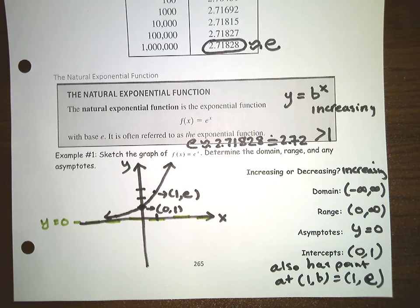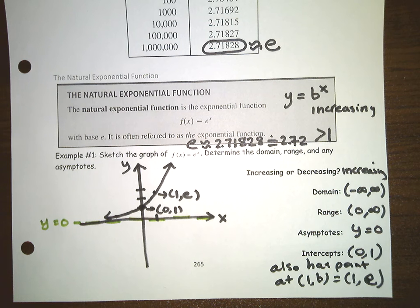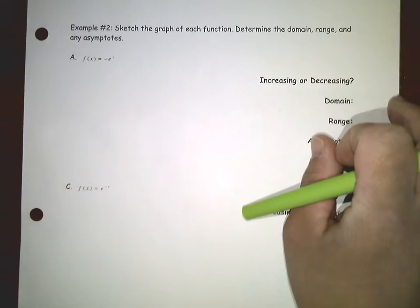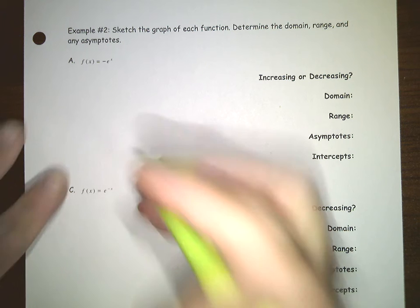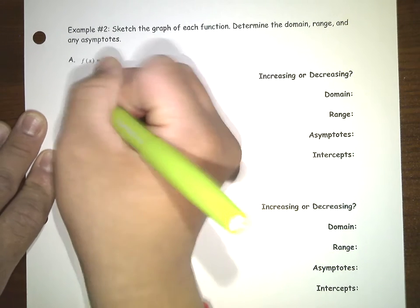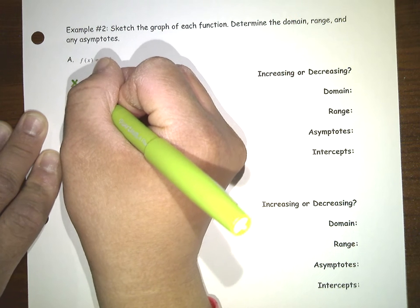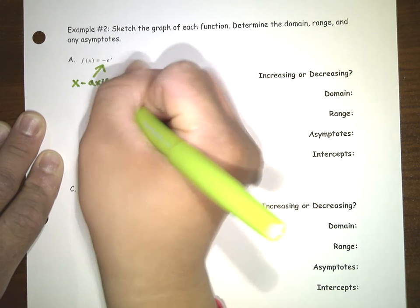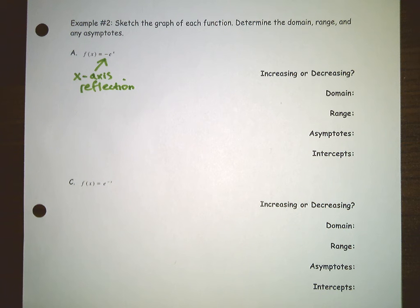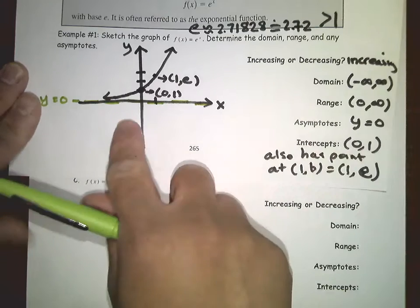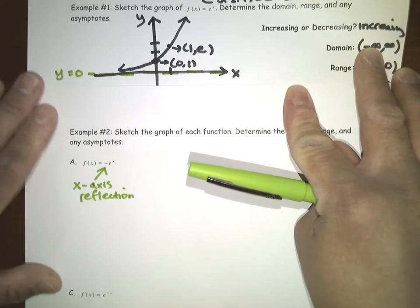Now let's look at another example — graphing these functions. Again, this is very similar to what we were doing before, but the function just has a base of e. We're asked to sketch the graph and determine the domain, range, and any asymptotes. Here we have negative e to the x, which is just an x-axis reflection of the original graph.